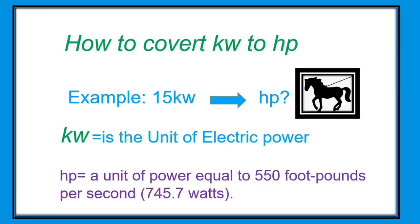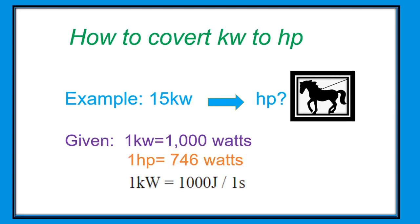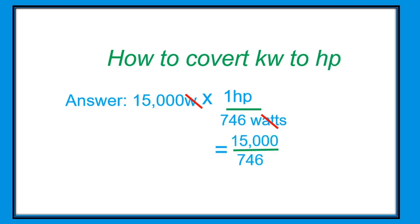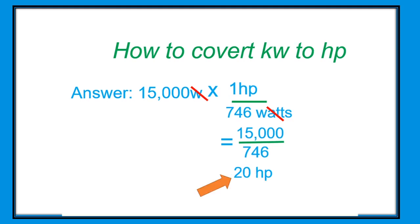Next, how to convert kilowatts to horsepower. Our example is 15 kilowatts. Kilowatt is the unit of electric power, and horsepower is a unit of power equal to 550 foot-pounds per second, or 745.7 watts. Given: one horsepower equals 746 watts and one kilowatt equals 1,000 joules per second. The calculation is 15,000 watts times one horsepower over 746 watts — canceling the watts — so 15,000 divided by 746 equals 20 horsepower.